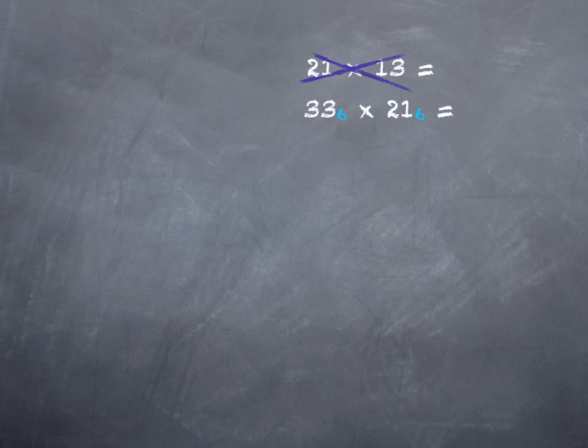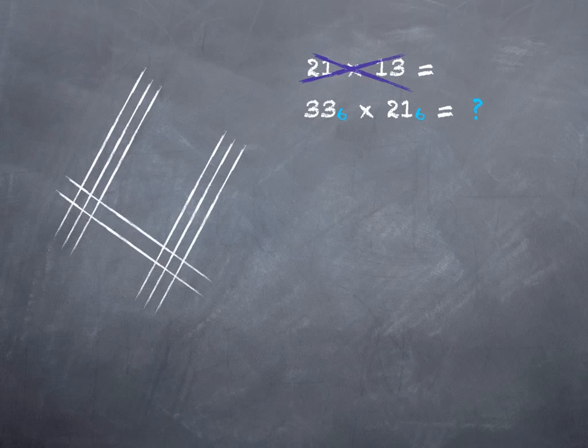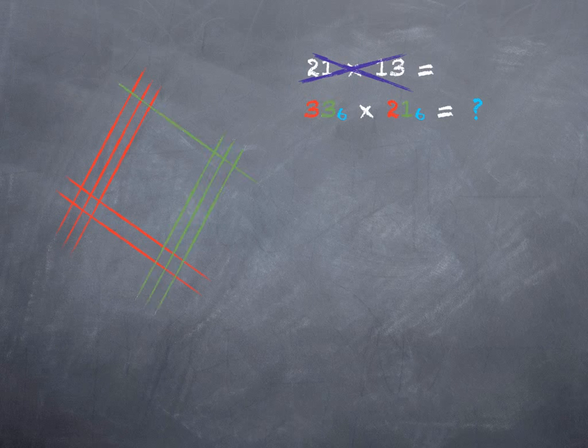So twenty-one is just three three in base six. You can kind of verify that two tens and one one are the same as three sixes and three ones. And then thirteen, which is one ten and three ones, is also two sixes and one one. So now we can draw our picture just like we did before. Three in the sixes place, and three in the ones place. Two in the sixes place, and one in the ones place. And again, let's color code it to keep track.